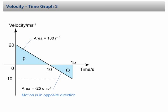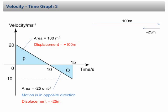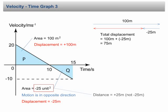From 0 to 10 seconds, the displacement is positive 100 meters, showing the object moves 100 meters in the positive direction. After 10 seconds, the displacement becomes negative 25 meters, suggesting the object turns back and moves 25 meters in the negative direction. As a result, the total displacement is 75 meters. For distance: distance is a scalar quantity with no negative value, so even though the area below the x-axis is negative, the distance travelled is taken as positive 25 meters. Therefore, the total distance travelled is 100 + 25 = 125 meters.